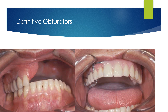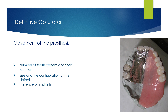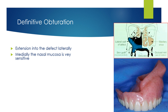The construction of the definitive obturator may be considered four to six months after surgical resection. The timing depends on the size of the defect, progress of healing, and the prognosis of the tumor. Retention of definitive obturators depends on the number of teeth present and their location, the size and configuration of the defect, and the presence of dental implants. Retention comes from engaging the scar band between the oral cavity and the skin graft lining at the lateral wall of the defect. Medially, the nasal mucosa is very sensitive and should be avoided.